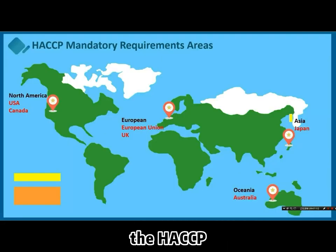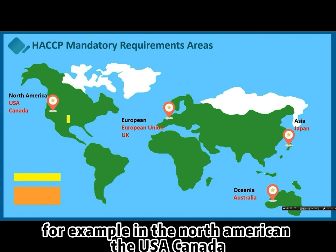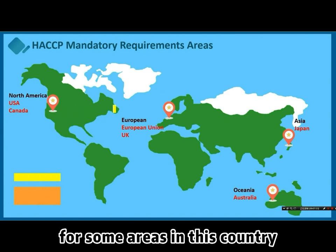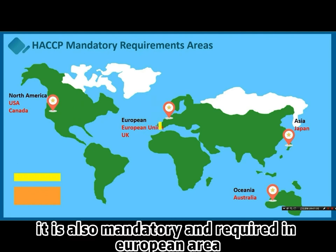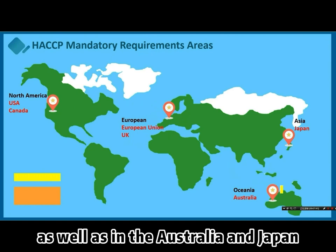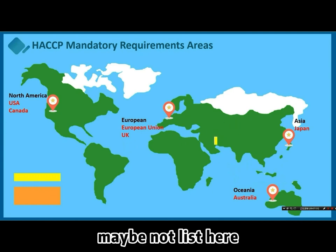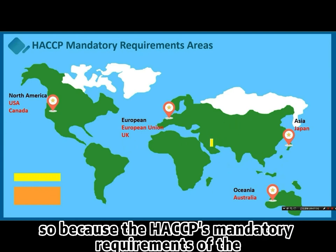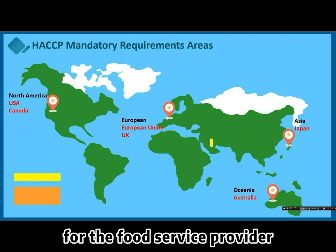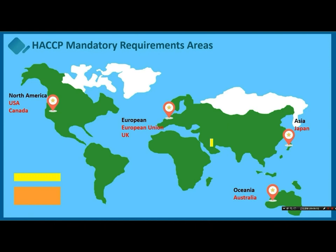HACCP principles have become mandatory in many countries. For example, in North America — the USA and Canada — this has even become law. It is also mandatory in the European area, including the European Union and UK, as well as in Australia, Japan, Turkey, and other countries. Because of these mandatory HACCP food safety and temperature monitoring requirements, food service providers will try their best to provide temperature monitoring in their food service systems.